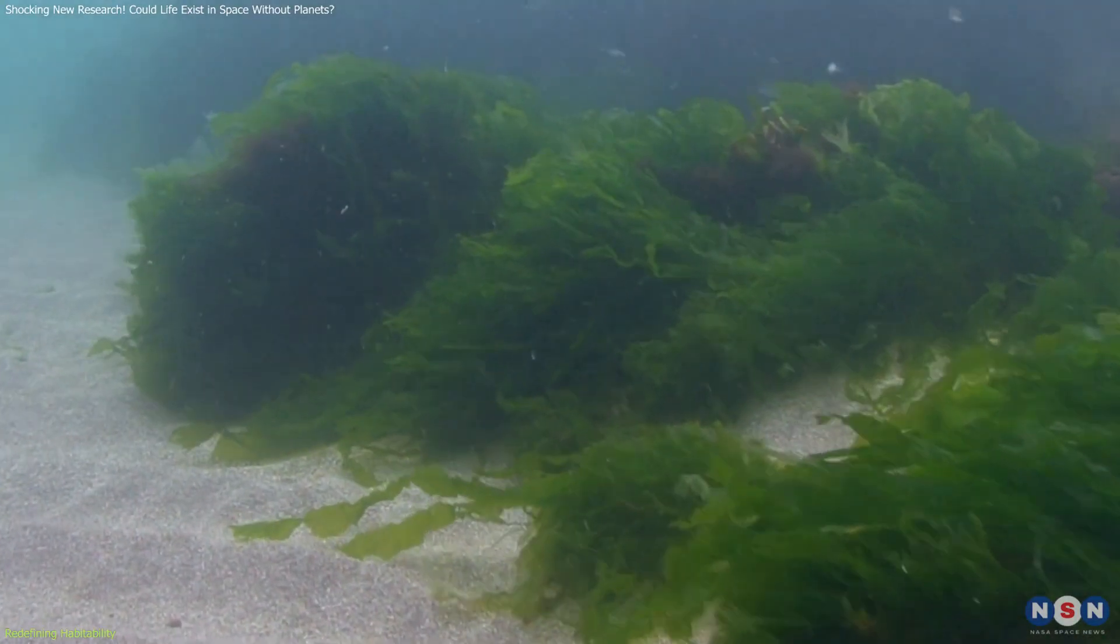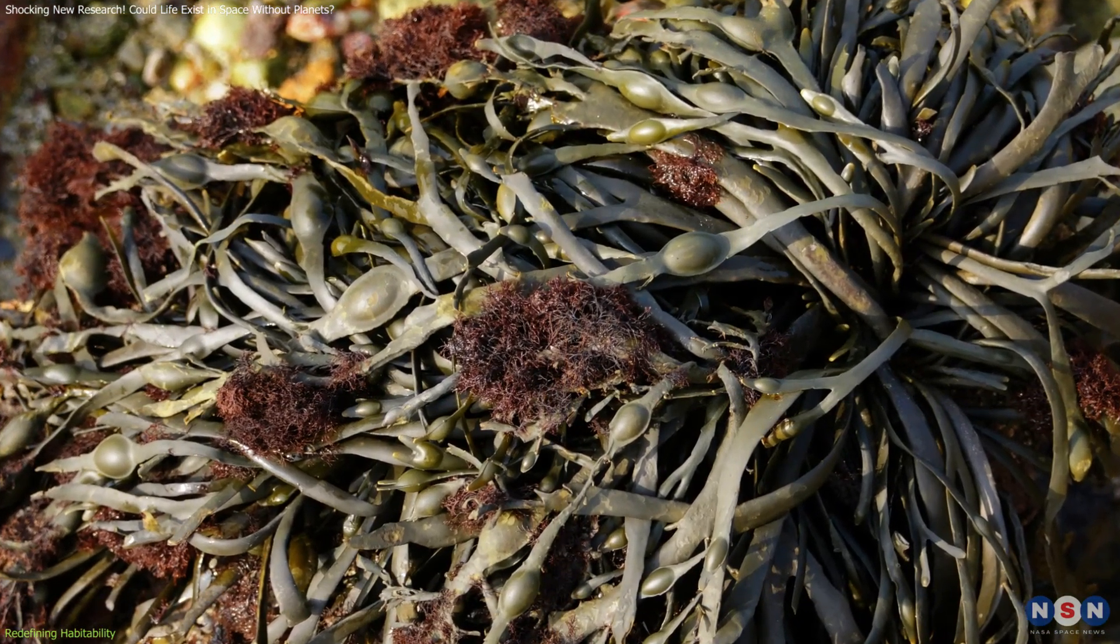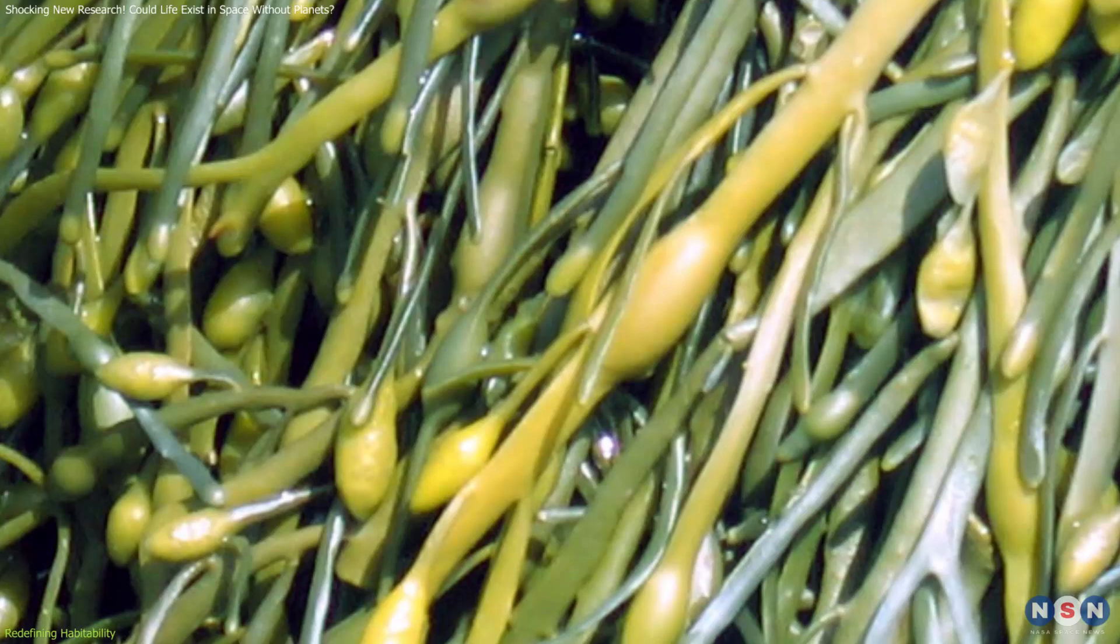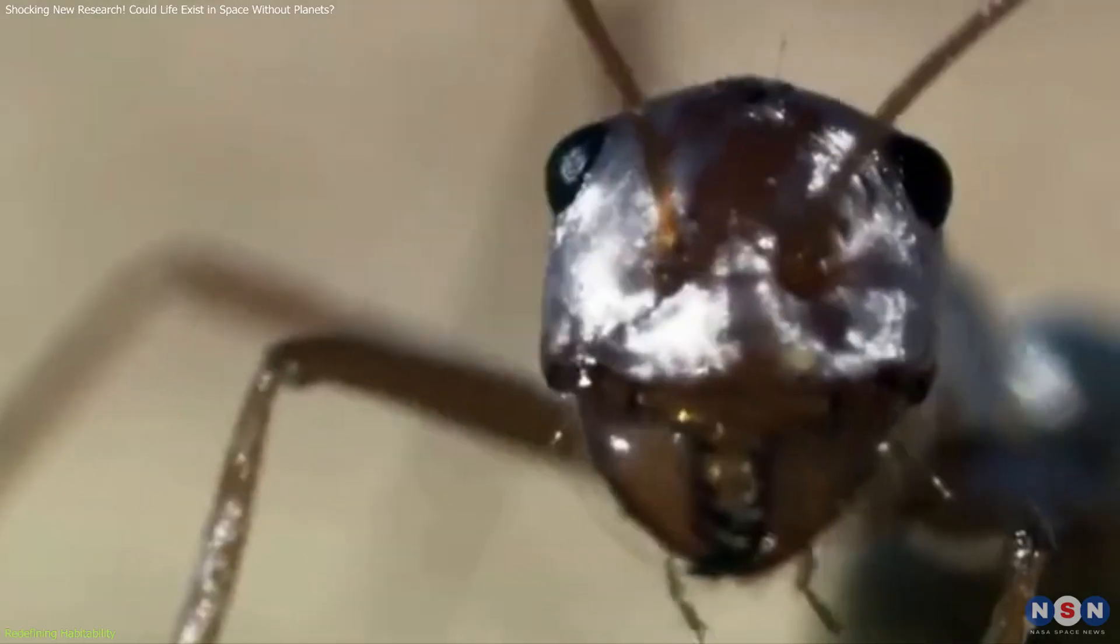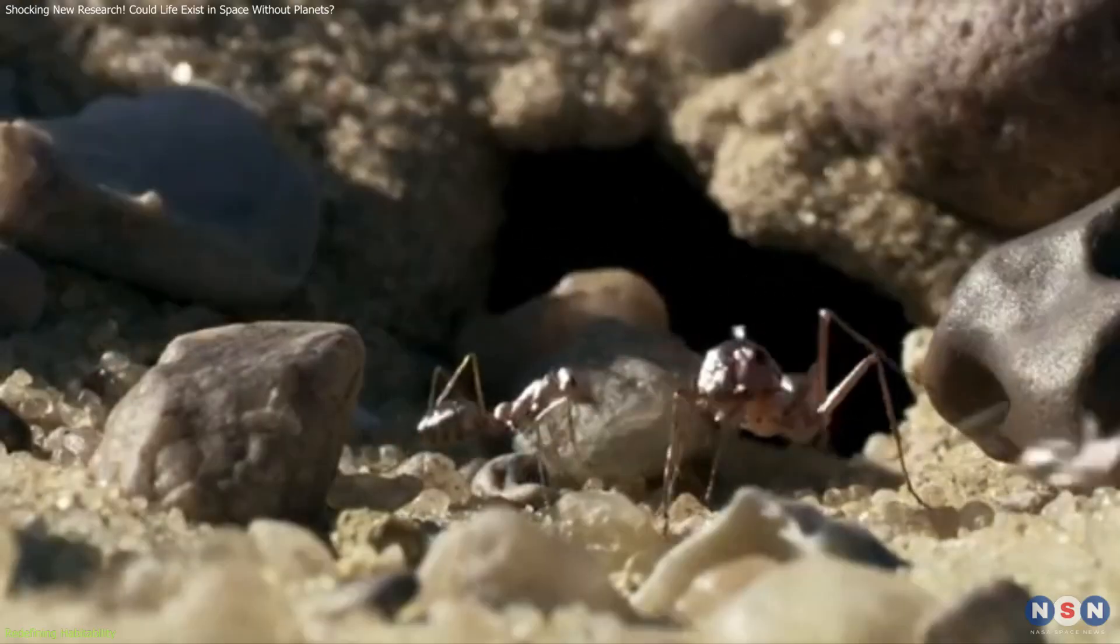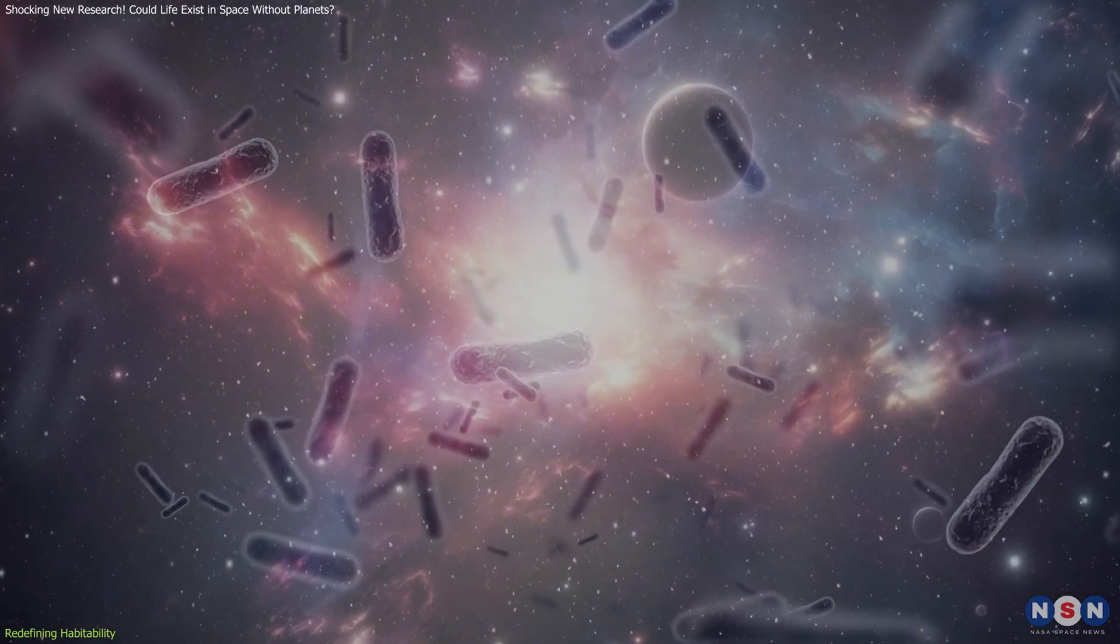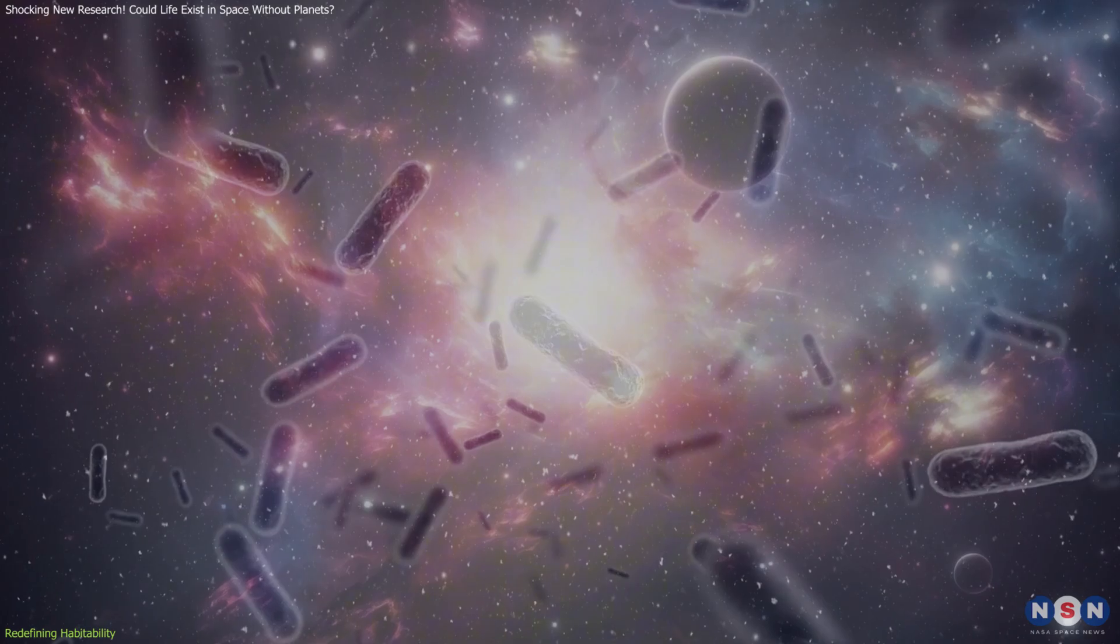Similarly, seaweed like Ascophyllum nodosum uses air bladders to regulate internal pressures, maintaining buoyancy and gas exchange. The Saharan silver ants' reflective body surfaces minimize heat absorption, enabling survival in harsh desert conditions. These examples underscore how life manipulates its surroundings to endure extreme environments.